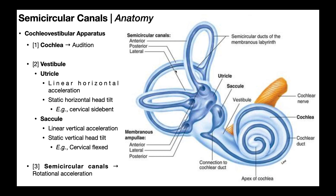Then we have the semicircular canals, and there are three of them. They are named anterior (also called superior), posterior (which has no other name), and lateral (also called horizontal). They sense rotational acceleration, as opposed to the vestibule, which senses linear acceleration or static positioning in side bending, flexion, or extension. Each one of these canals connects back with the utricle via an enlargement called the ampulla, and each of the three canals has an ampulla.